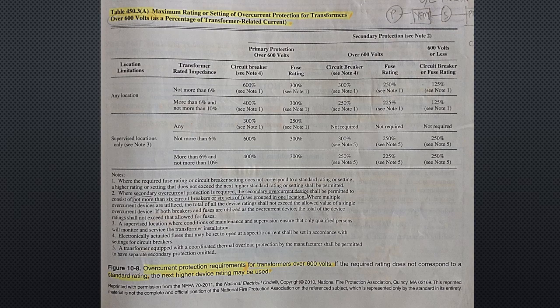Overcurrent protection. Transformers require overcurrent protection; general requirements are specified in section 450.3 of the code. Separate overcurrent protection devices are normally required for both the transformer primary and secondary, with device ratings based on the current rating of each winding. Requirements differ for transformers rated over 600 volts versus 600 volts or less. These requirements are for the transformer only; conductors connected to the transformer must have overcurrent protection per articles 240 and 310.